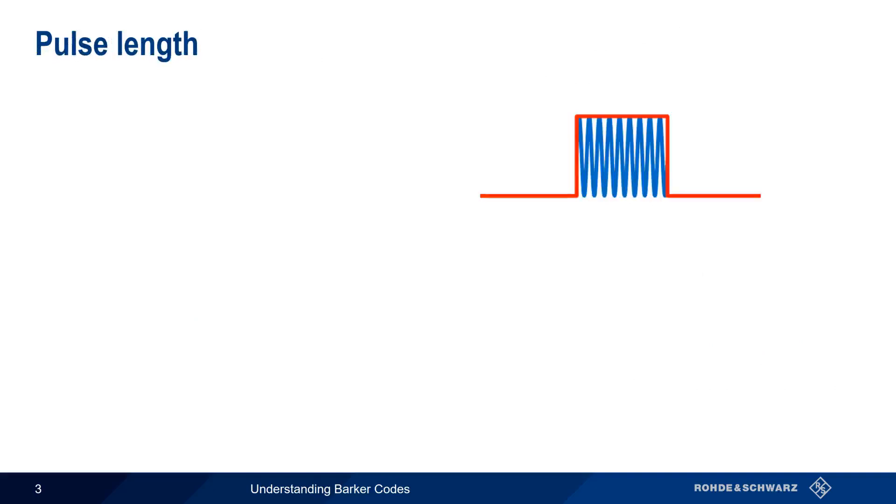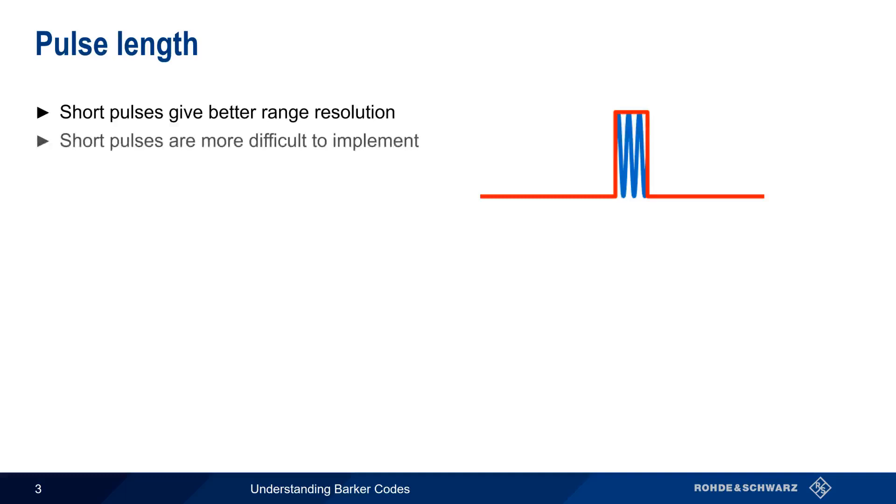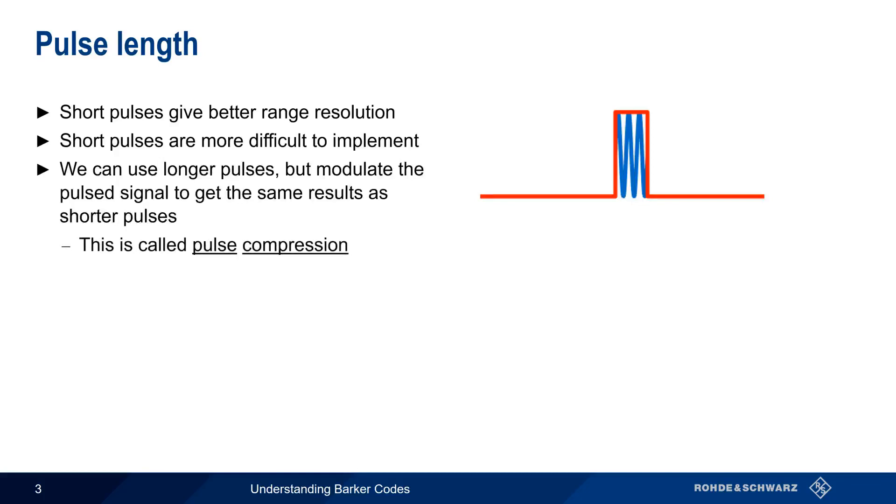The length of the pulse is very important. If we want high precision in our range measurements, or if we want to separate closely spaced targets, we need to use shorter pulses. However, this is difficult for a number of reasons, such as the need for higher peak powers. One way of getting around this issue is to use longer pulses, but vary the frequency or phase over the duration of the pulse. This is called pulse modulation, or modulation on pulse. You'll also hear this called pulse compression, because we're essentially using a longer pulse, but achieving the same results as a shorter pulse.